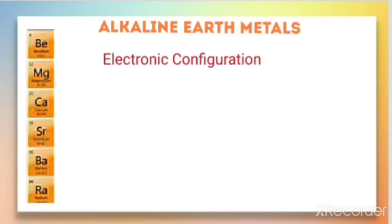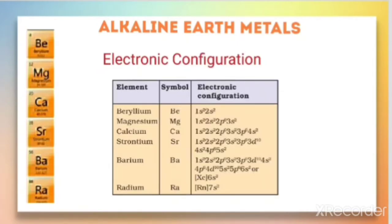Now let us discuss the electronic configuration for these elements. Because the last electron is in the s orbital in the valence shell, these belong to the s block. We can find a similar pattern: the last electron is in the s orbital — for beryllium it is 2s², magnesium 3s², calcium 4s², strontium 5s², and so on.